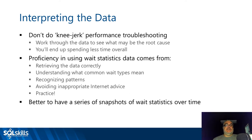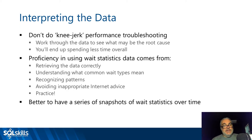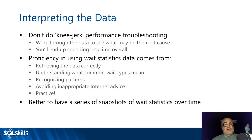When interpreting wait statistics data, don't do knee-jerk performance troubleshooting. Work through the data to try to decide what the root cause is, because it might not be obvious from the symptoms. Using wait statistics takes some practice. You need to know how to get the data back correctly, understand what the common wait types mean, and recognize patterns. I have a waits library linked at the end of the deck showing what all the various common wait types mean.